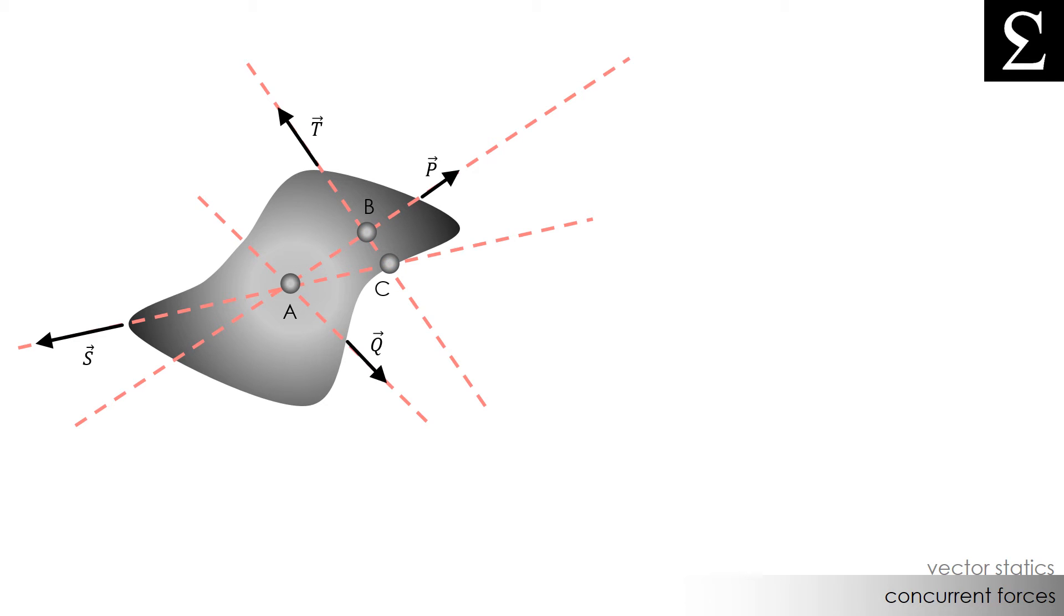This means that force T and P are concurrent forces. It also means that force T and S are concurrent forces. But force T, P, and S are not concurrent forces since they do not intersect at a common point, at the same common point.